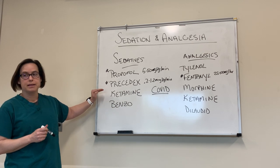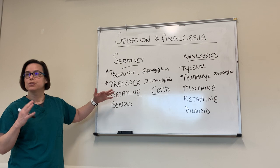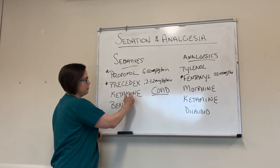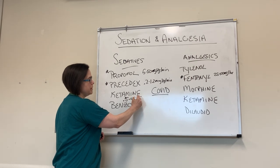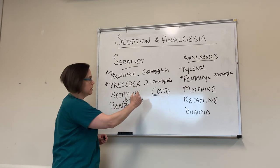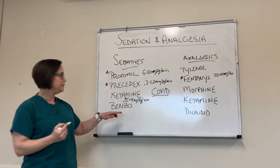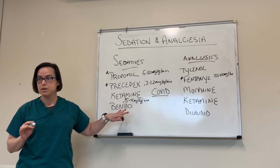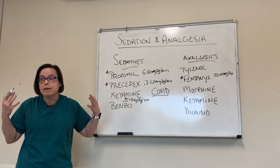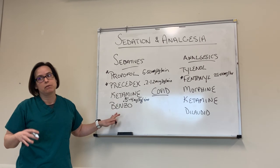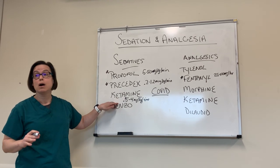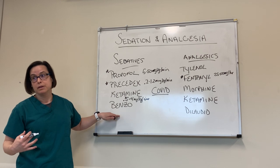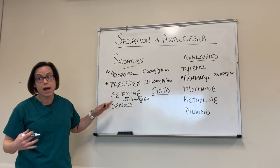Ketamine is an NMDA receptor antagonist — it causes dissociative states, so it has some pain function and some sedative function. The dose range is somewhere in the area of 0.5 to 4 mg per kg. It's a great option with less effect on blood pressure than some of the other medicines. Downsides: it can cause a lot of hypersalivation, laryngospasm, tachycardia, and hallucinations. Sometimes we give it in conjunction with benzos if patients are getting hallucinations. But in general, it's a great med that just sort of makes people chill out.